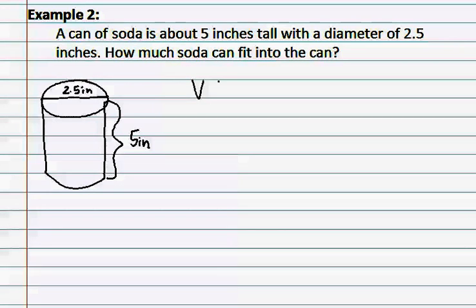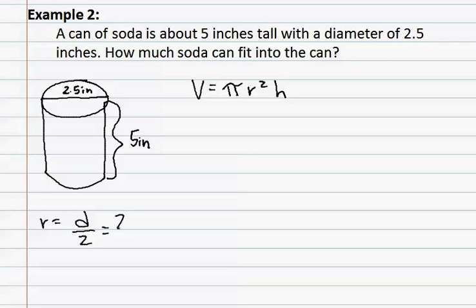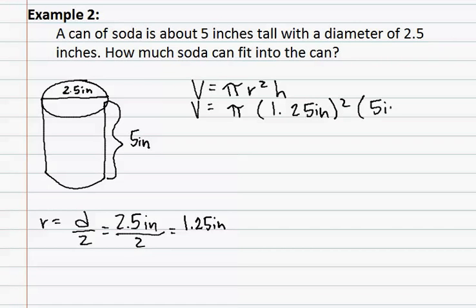Since our formula of volume equals pi r squared h requires us to have a radius and not a diameter, we will need to find the radius. We know that the radius is the diameter divided by two, therefore it is 2.5 inches divided by two, which results in 1.25 inches. We can now use this in our formula.